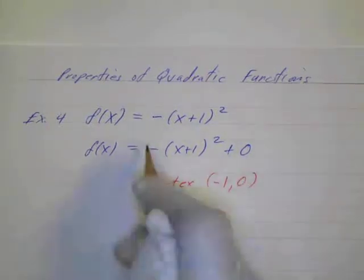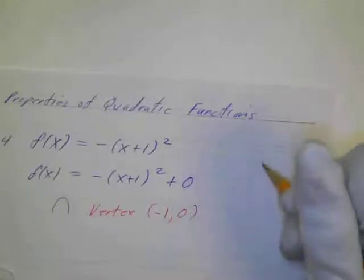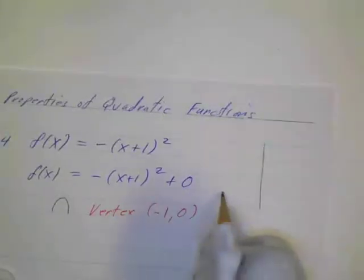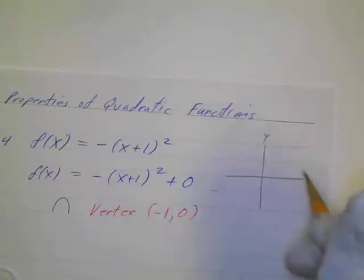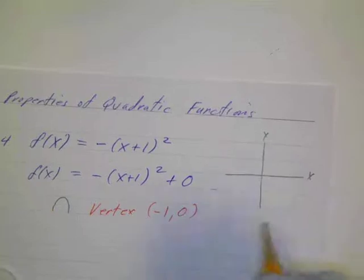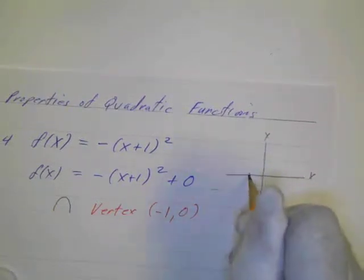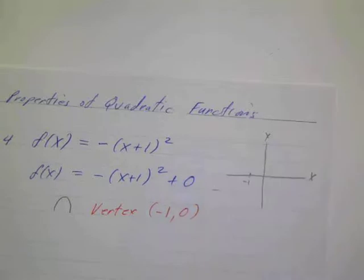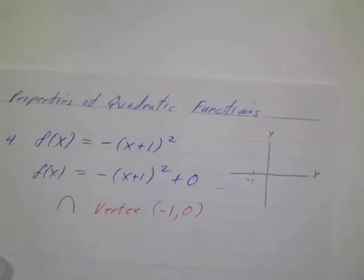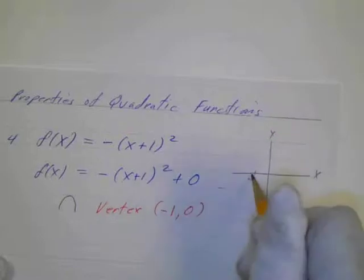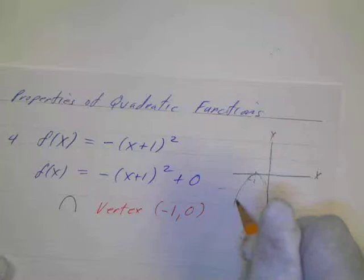And we know it's going to be shaped like an N because that's negative. So we can draw a sketch of it. Y, X. And it's going to be at the point negative 1 and 0. So there's negative 1, 0. And it's going to be shaped like an N. So it's going to go like this.